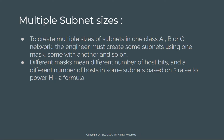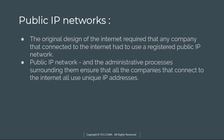To create multiple subnet sizes in a Class A, Class B, or Class C network, the engineer must create subnet numbers using one mask. Different masks mean different numbers of host bits and a different number of hosts in the subnets, based on this formula.